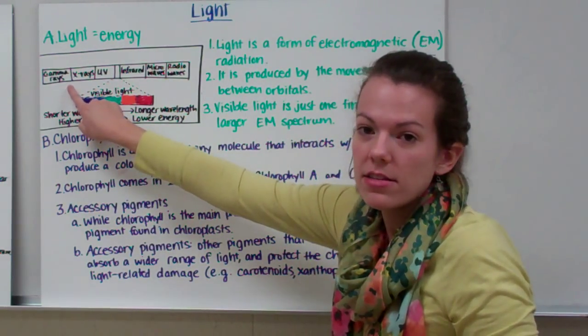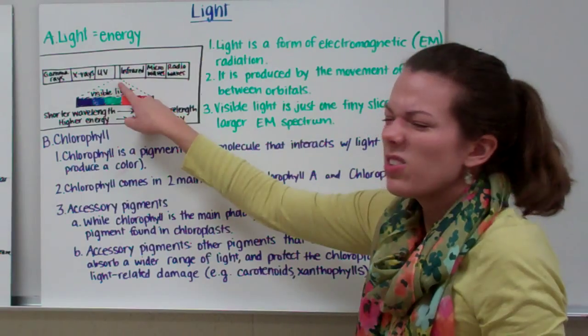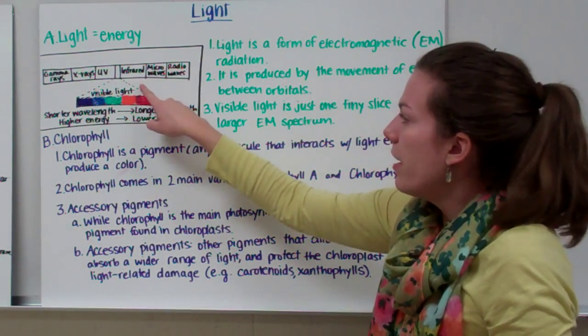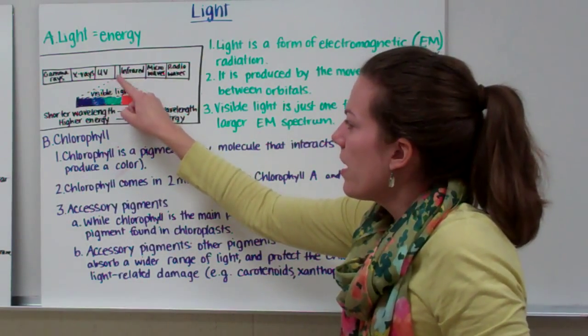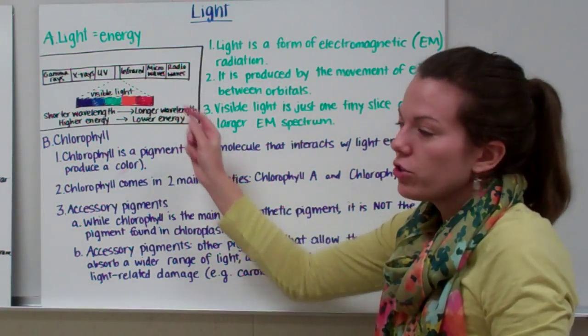Our visible light is just one tiny slice of the larger electromagnetic spectrum. So if this is our electromagnetic spectrum, it consists of gamma rays, x-rays, UV, then we have visible light. It's only that tiny little slice right there. Infrared rays, microwaves, and then we have our radio waves. So our visible light is just one tiny slice of that electromagnetic spectrum.